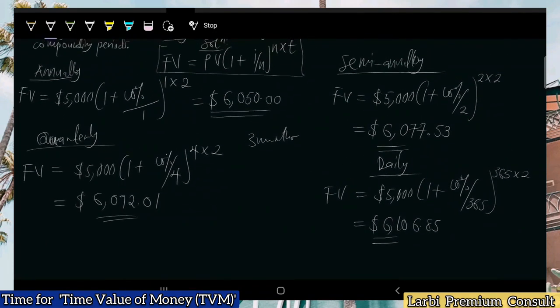So those are the future values for annually, semi-annually, quarterly, and daily. As you can clearly see from the calculations, when it comes to time value of money, it is not only the interest rate and time horizon that determine how well an investment is maximized — how frequently the investment is compounded also determines the value. The compounding period plays a major role in the value of money today versus what you receive in the future.